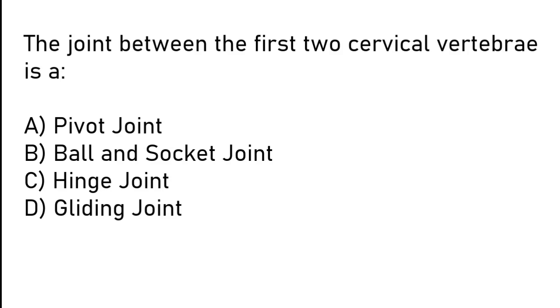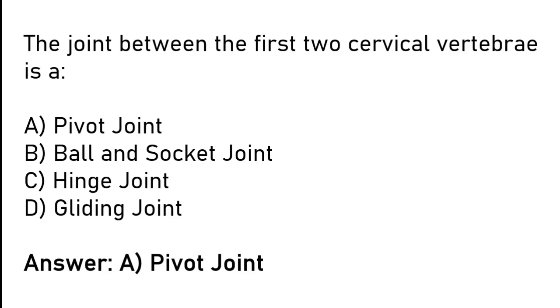The joint between the first two cervical vertebrae is a: pivot joint, ball and socket joint, hinge joint, or gliding joint. The correct answer is option A: the joint between the first two cervical vertebrae is a pivot joint.